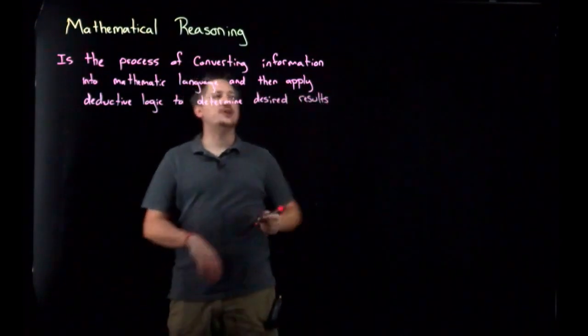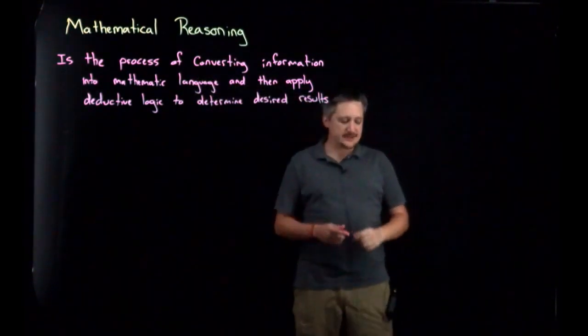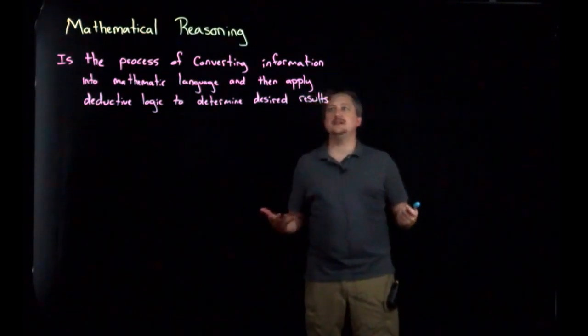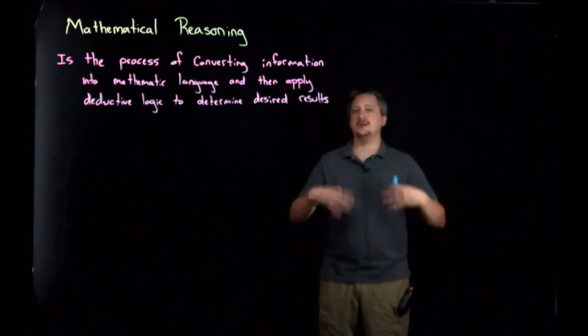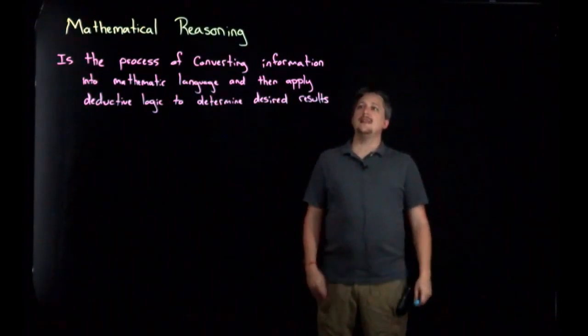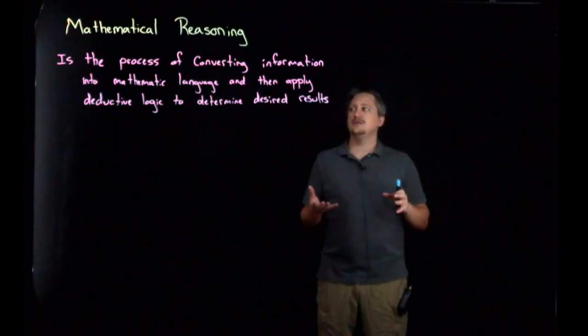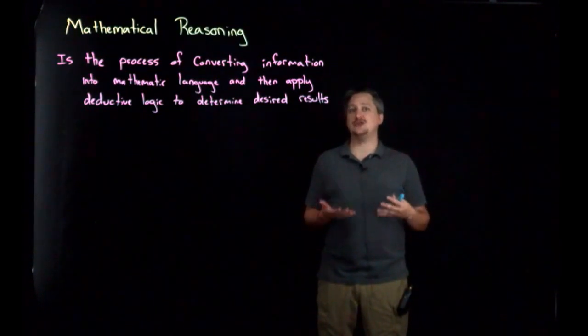So this is sort of an abstract formal definition. But really what we mean when we say this is that mathematical reasoning is the process of taking something very informal, something introduced in some vernacular—meaning everyday language—and trying to twist that into something that you can actually apply your mathematical techniques to.